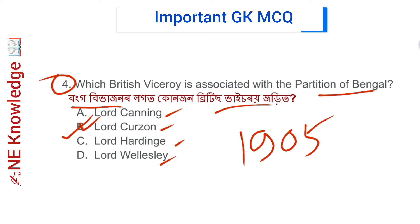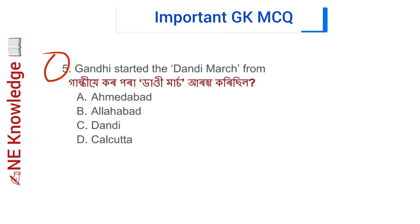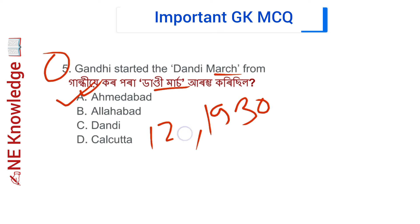Question number 5: Gandhi started the Dandi March from? Options: Ahmedabad, Allahabad, Dandi, and Kolkata. Correct answer: Option A — Ahmedabad. Gandhi began the Dandi March on March 12, 1930, from Ahmedabad.